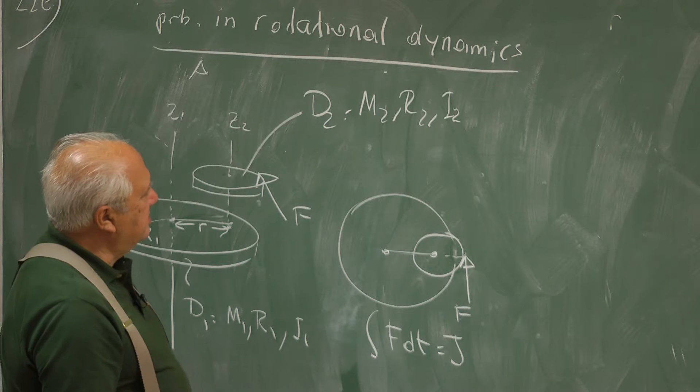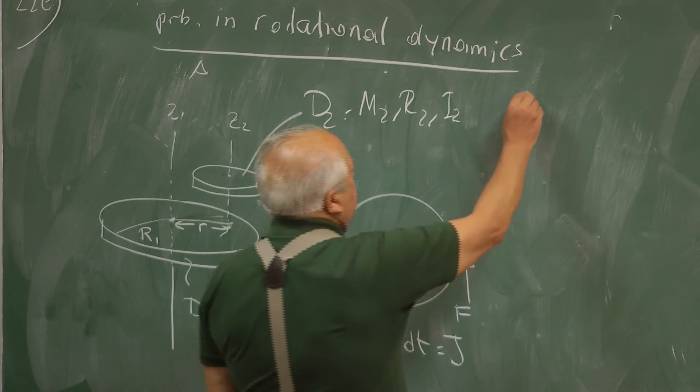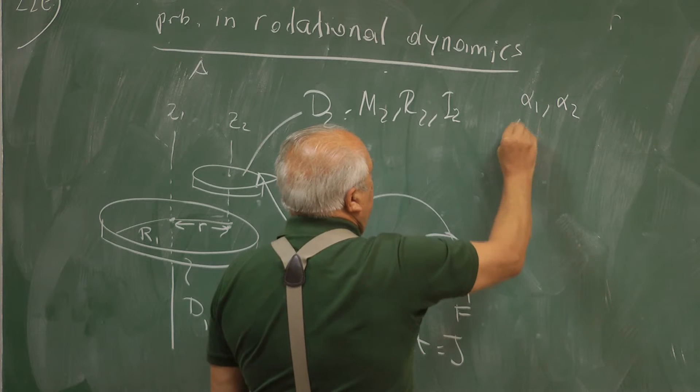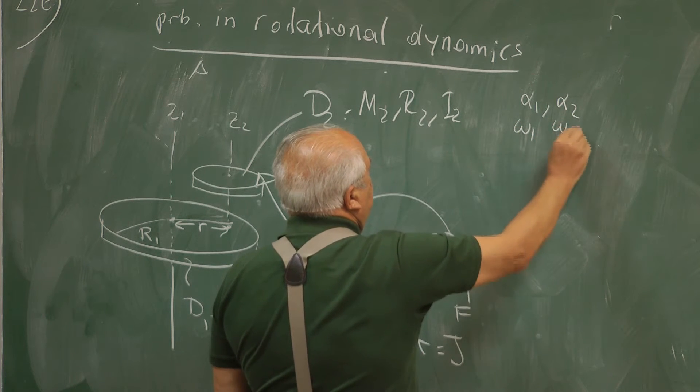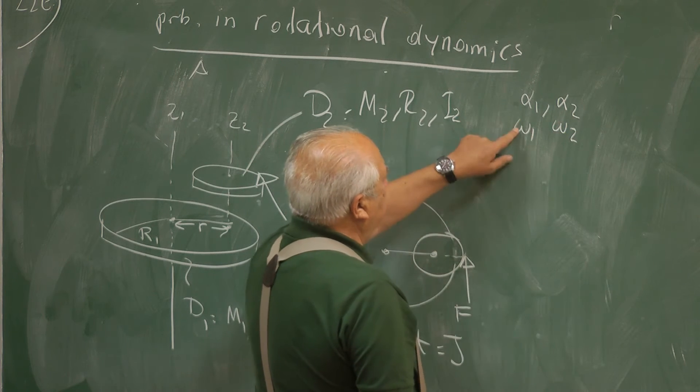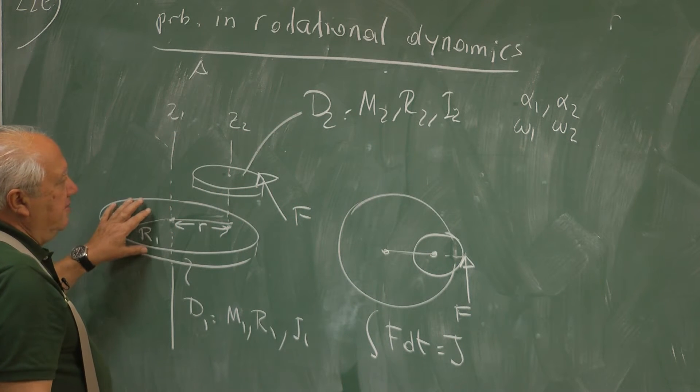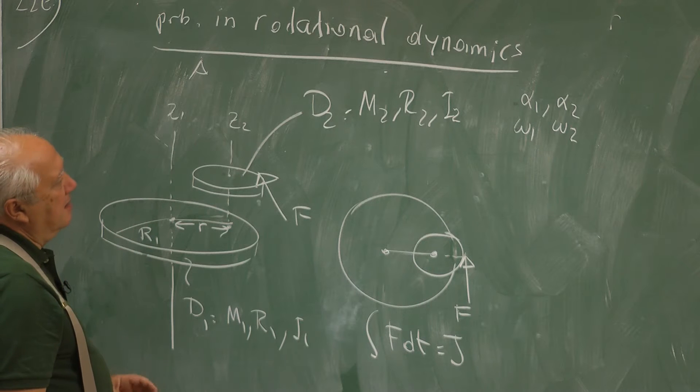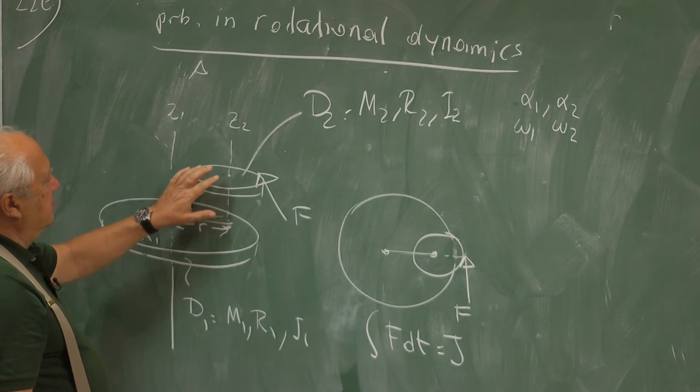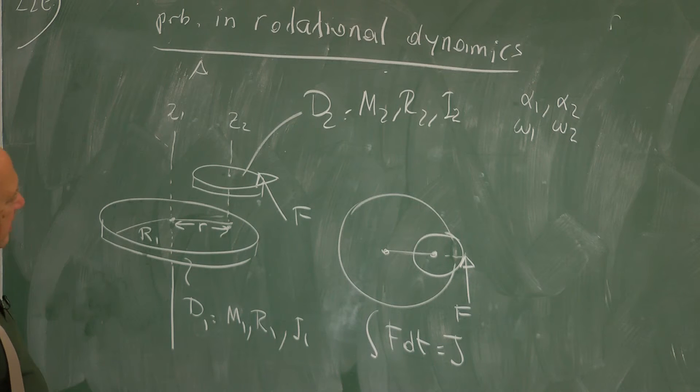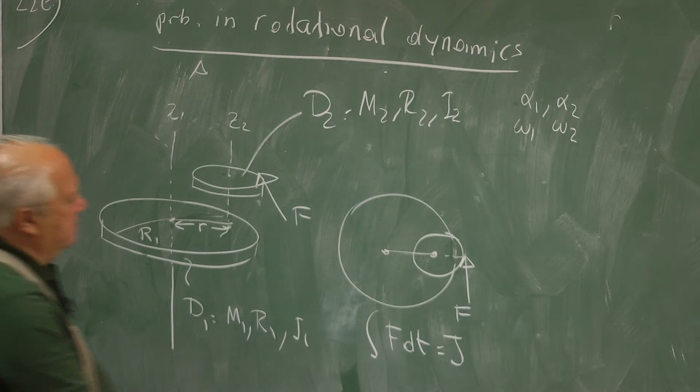Force is applied for a short time. The question is, what is α1, what is α2, and similarly what is ω1 and ω2? α1 and ω1 are the angular acceleration and velocity of the big disk, and α2 and ω2 are similar quantities for the small disk. This is the problem.